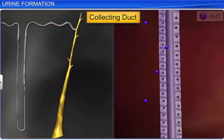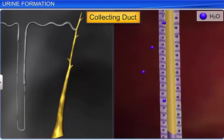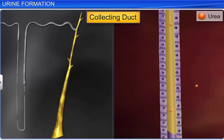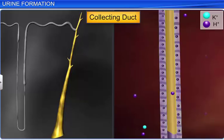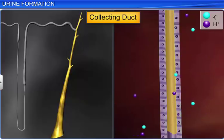The collecting duct helps to reabsorb water, thereby increasing the concentration of urine according to the body's state of hydration. It also maintains osmolarity by enabling small amounts of urea to pass into the medullary interstitium. Further, it selectively secretes hydrogen and potassium ions and maintains the ionic and pH balance of blood.